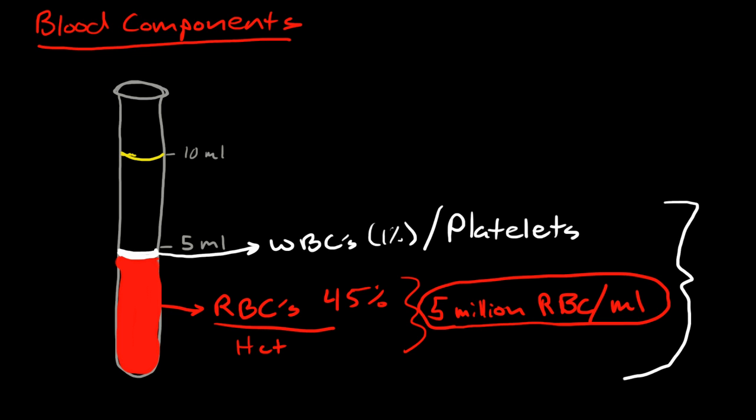This is going to be white blood cells and platelets. This buffy component when spun down are the cellular components of the blood: red blood cells, white blood cells, and platelets—which are technically not cells, they are cellular components, little pieces of cells.